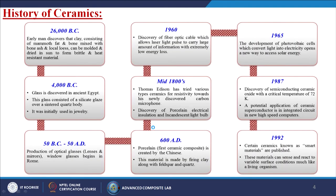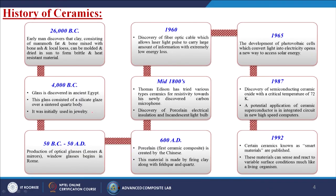Now we are going to discuss about the history of ceramics; it has been started very long back. In 26,000 BC, early man discovered that clay consisting of mammoth fat and bone mixed with bone ash and local loess could be moulded and dried in the sun to form brittle and heat-resistant materials. By 4,000 BC, glass was discovered in ancient Egypt — a silicate glaze over a sintered quartz body, initially used for jewellery.